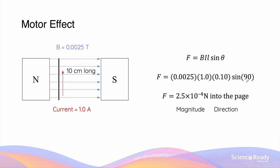We can substitute these numbers into the motor effect equation, as well as the angle between the conductor and the magnetic field, which is 90 degrees as they are perpendicular. This gives us a very small force of 2.5 × 10⁻⁴ Newtons. Using the right-hand palm rule, the force acting on this conductor will be into the page.